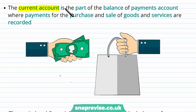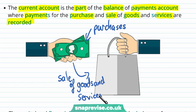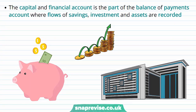The current account is the part of the balance of payments account where payments for the purchase and sale of goods and services are recorded. So it's about the raw exports and imports that we observe in an economy — things like buying cars from abroad. The capital and financial account is the part of the balance of payments account where flows of savings, investment and assets are recorded.